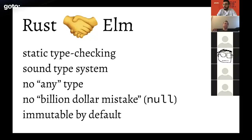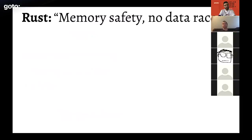Both are immutable by default. Rust has opt-in mutation — you can tag something as mutable, but with additional compiler restrictions. Elm goes further: everything is always immutable, and all Elm functions are pure with no side effects — it's a pure functional language. Rust's reliability features also include memory safety and lack of data races. Data races occur in concurrency when multiple threads try to access the same value, especially when one or both can write to it simultaneously.